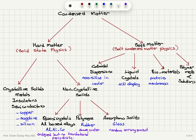Hard materials include crystalline solids — which can be metals, insulators, or semiconductors, such as crystalline copper, sapphire, or silicon — and non-crystalline solids. Non-crystalline solids include quasi-crystals such as aluminum-based alloys, which are ordered but lack translational periodicity; polymers such as rubber, which have some order; and amorphous solids such as glass, where we have a random arrangement.